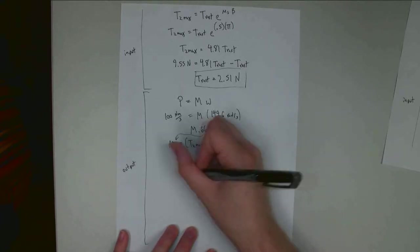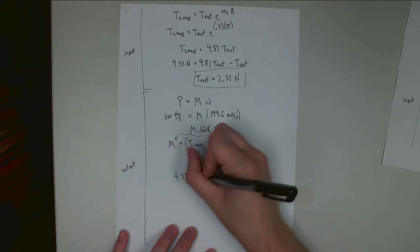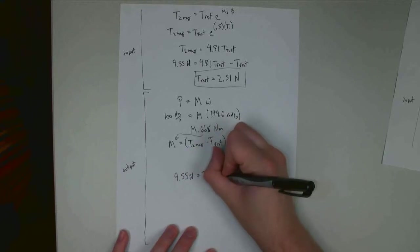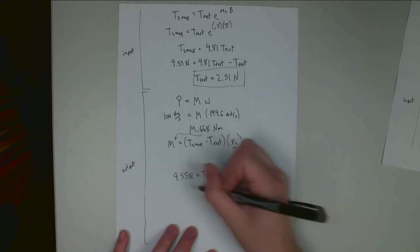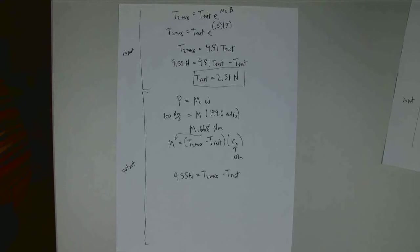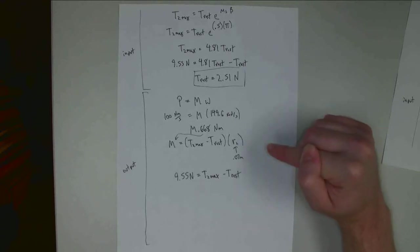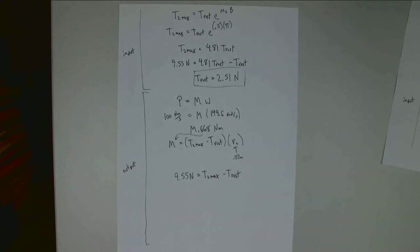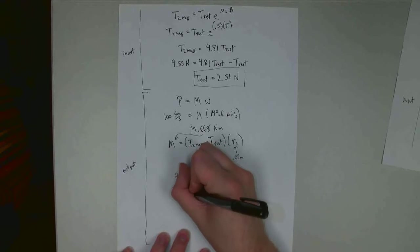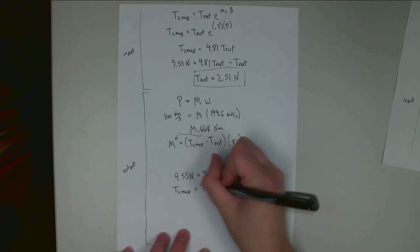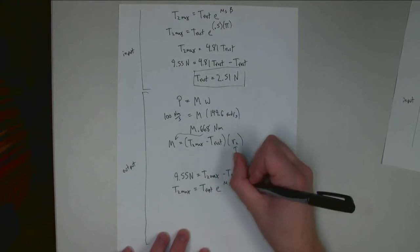And if I solve for that, I end up with 9.55 newtons is equal to T2 max minus T rest. And this should look familiar because we wind up with the exact same numbers as before. We had a larger angular velocity, but the smaller radius canceled that out. And so, we end up with one equation that's exactly the same. We still have the second equation we're going to need to deal with.